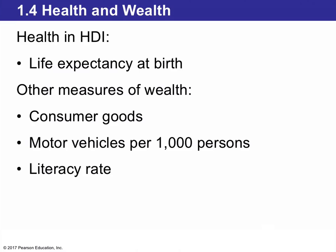Another measure of the HDI includes health and wealth. For health, we look at life expectancy at birth — how many years a child born today is expected to live. We also look at measures of wealth like consumer goods, the number of motor vehicles per every thousand people, and the literacy rate, which is also related to health.